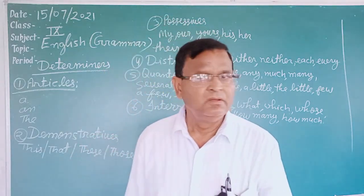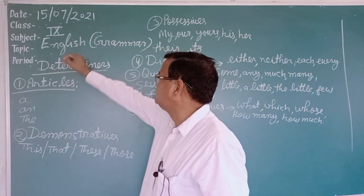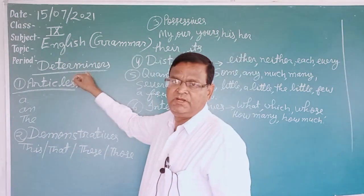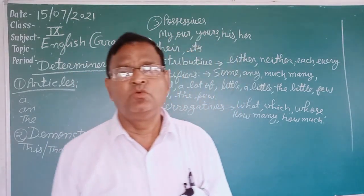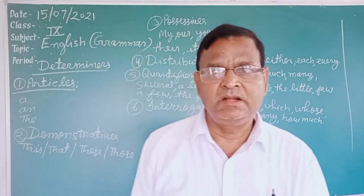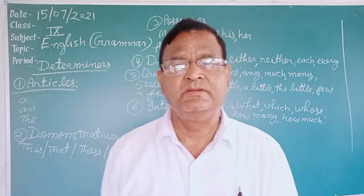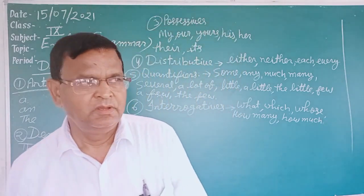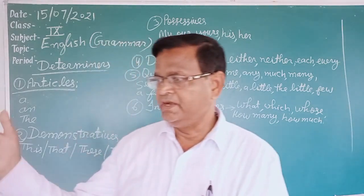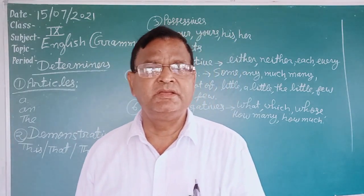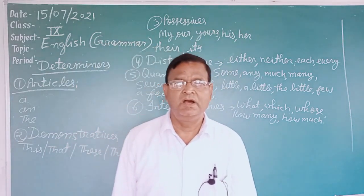Good evening students. As in the previous video, I continue the chapter in English grammar on Determiners, in which I have told you that determiners are the words that are used to identify or to specify a noun. I have told you that determiners are of six types.